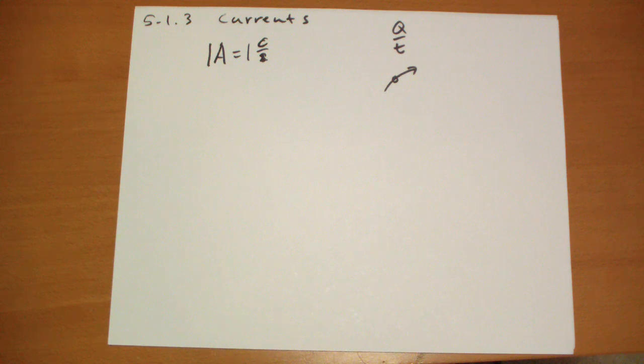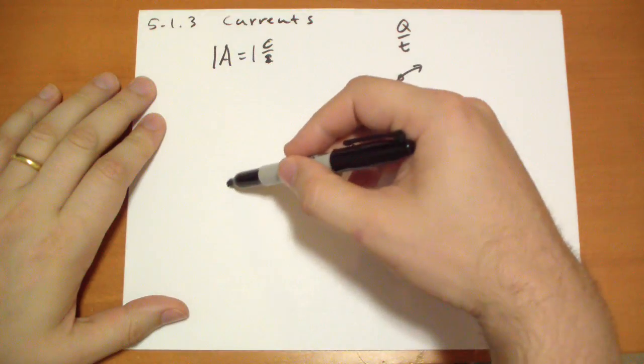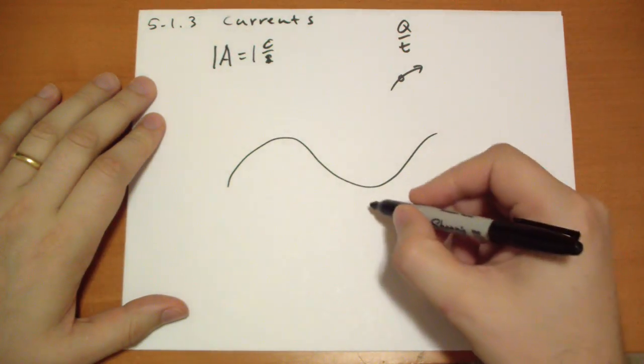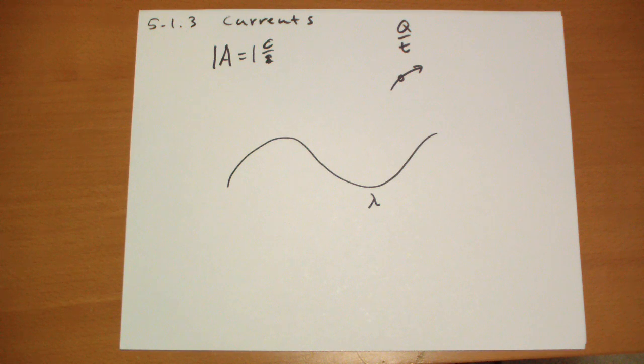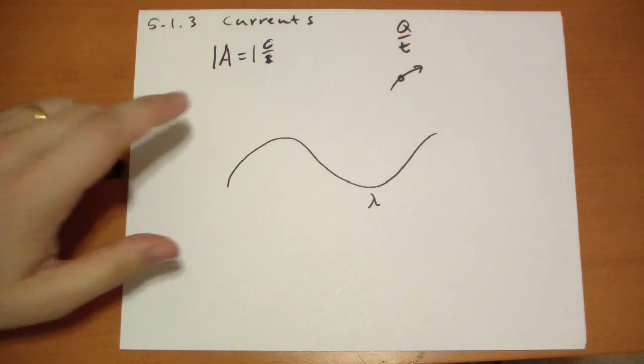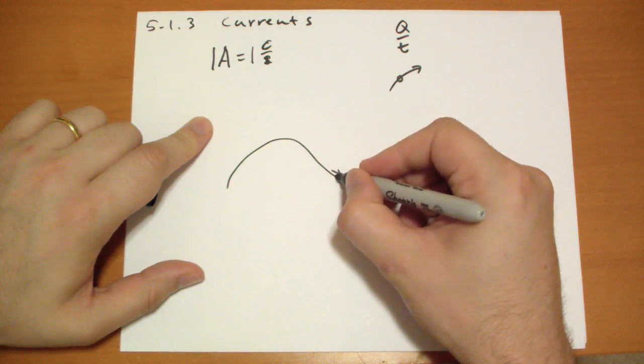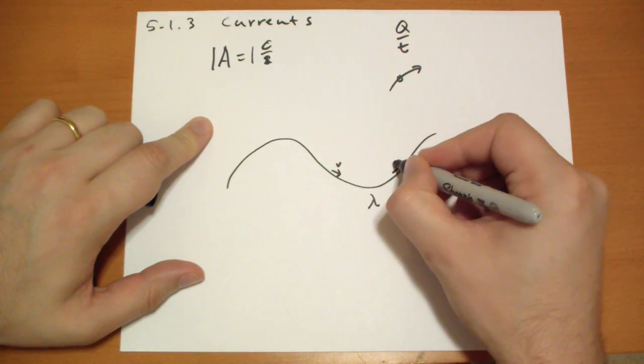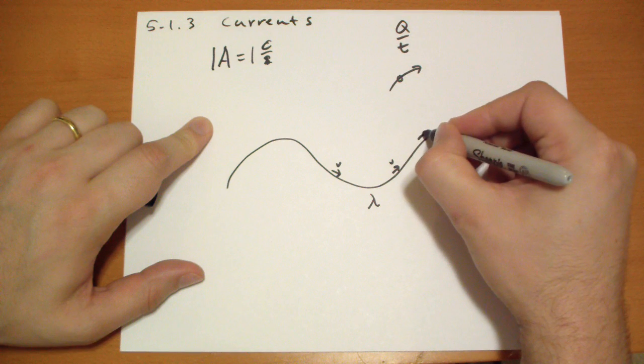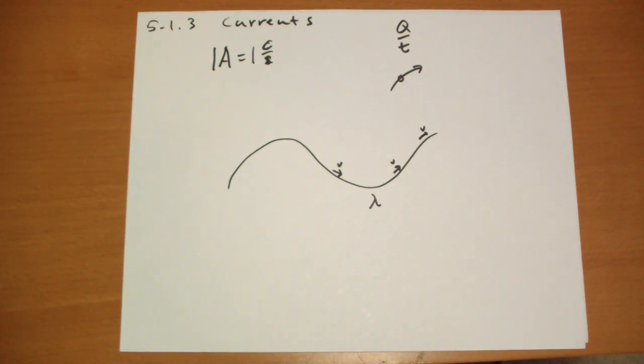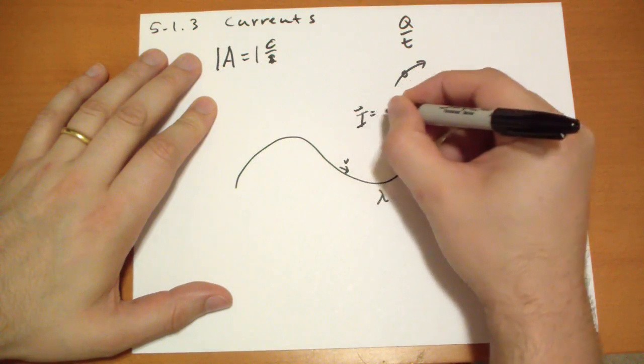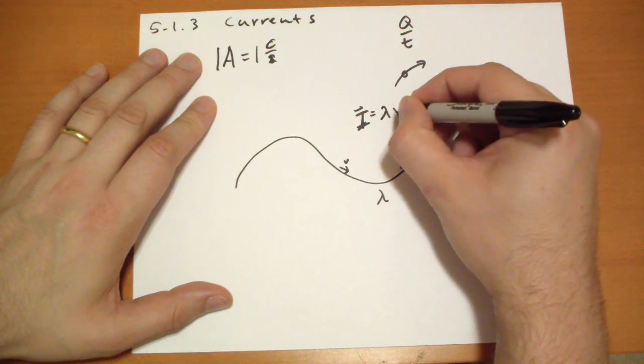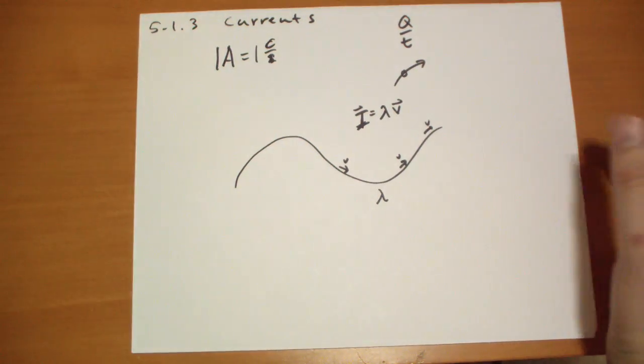So generally, if you have some line, and then you have some uniform charge density lambda, and the charges are moving across this line uniformly so that no charge is accumulating at some velocity v, or I should say speed v, because the velocity is changing, the direction is changing as it goes along the line, then i vector is just equal to lambda v vector at each point.